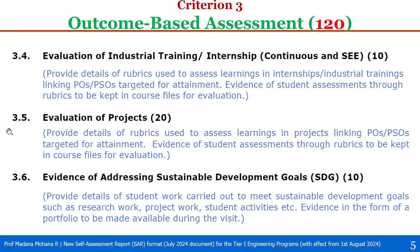The next sub-parameter is 3.5, evaluation of projects, which carries 20 points. Here we have to provide details of rubrics used to assess learnings in projects, linking POs and PSOs targeted for attainment. We have to provide evidence of student assessments through rubrics, to be kept in course files for evaluation.